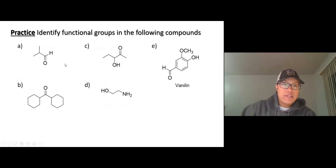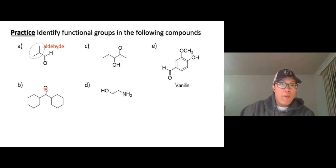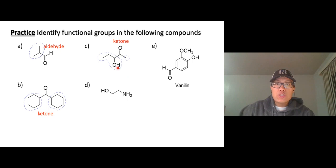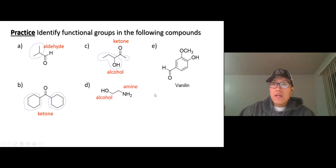Practice makes perfect — keep going. In the next set: C double bond O with H is an aldehyde, and there's an alkyl group right there — that's an aldehyde. C double bond O between two alkyl groups is a ketone. In compound C, OH — that's an alcohol. And C double bond O between two alkyl groups — that's a ketone again.